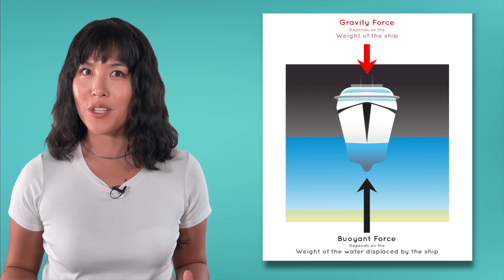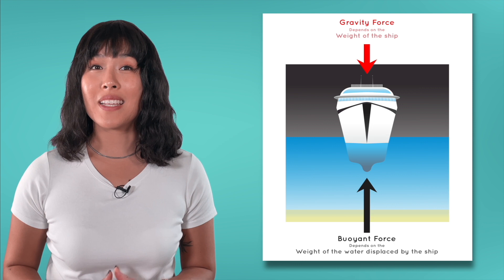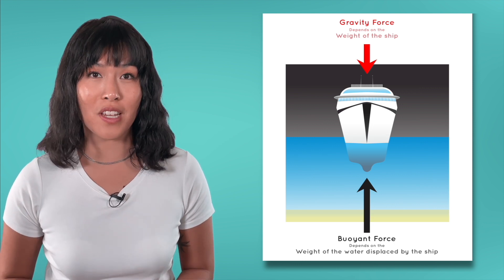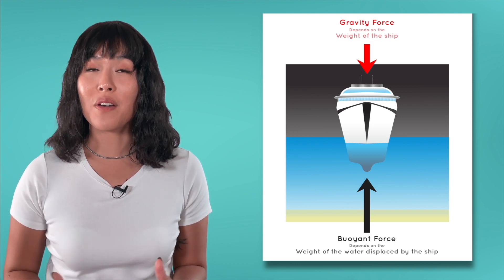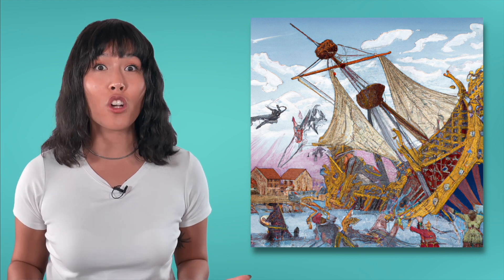In the case of a ship, the part of the hull that is underwater must displace enough water such that the mass of the ship is less than the mass of the displaced water. This is what went wrong with the Vasa. Once a large part of the hull filled with water, the mass of the ship increased, and the buoyant force from the displaced water was no longer enough to keep it afloat.